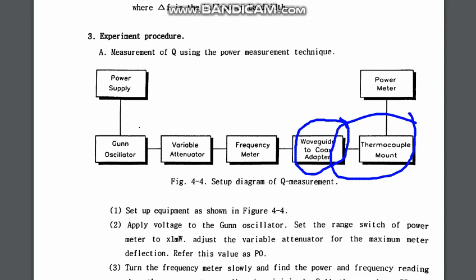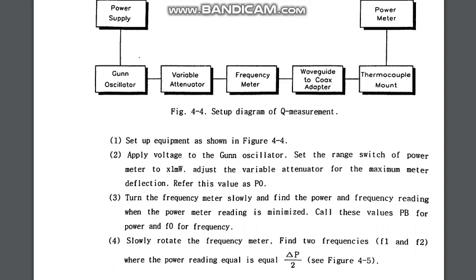The thermocouple mount gives readings on the power meter. To begin: apply voltage to the gun oscillator and set the range switch of the power meter to x1 milliwatt. Adjust the variable attenuator for maximum meter deflection and note this value as P0. Then slowly turn the frequency meter and find the power and frequency reading when the power meter reading is minimized — call these values Pv and fv.